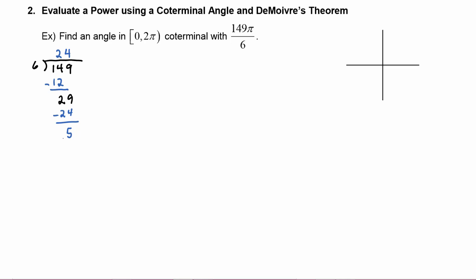So what that division tells us is that 149π over six is equal to twenty-four whole pi's plus five-sixths pi — so five pi over six.